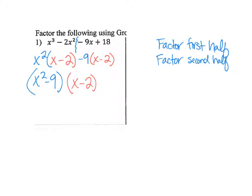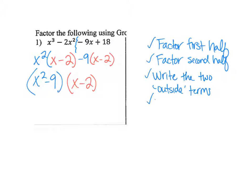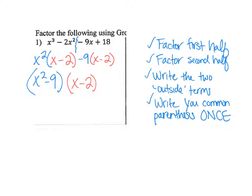Now we're going to put these x minus 2's together and write the outside terms — x² and negative 9 — in separate parentheses. So I have x² minus 9 times x minus 2. I grouped the first portion, factored the second half, and wrote the simplified version. Remember: write your common parentheses only once.